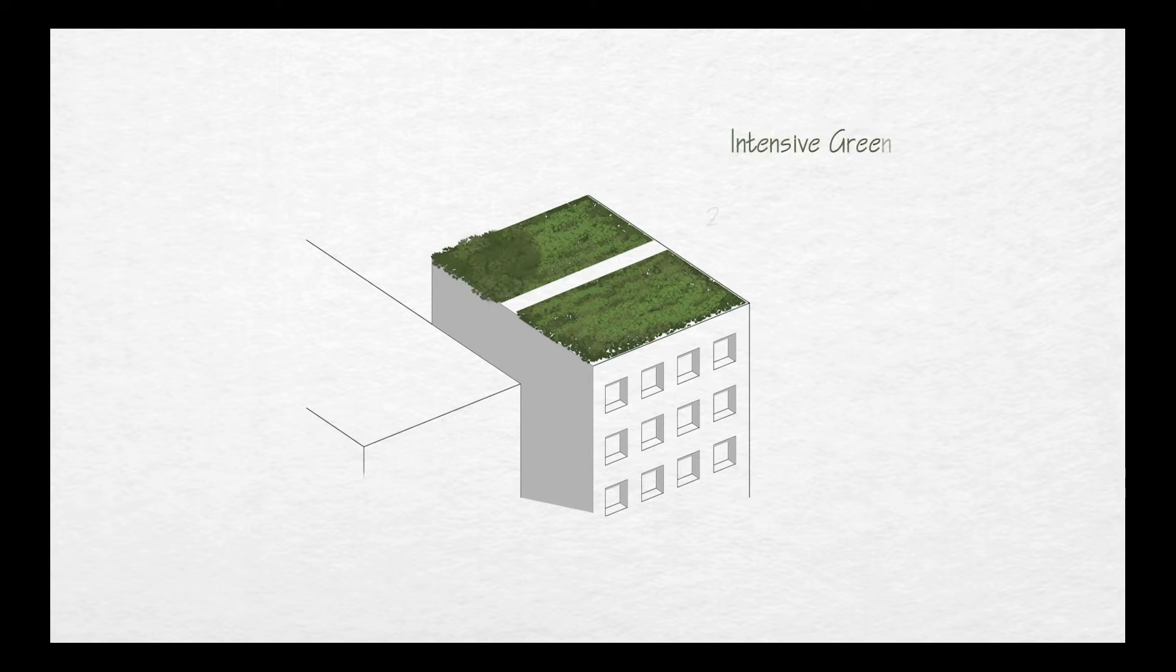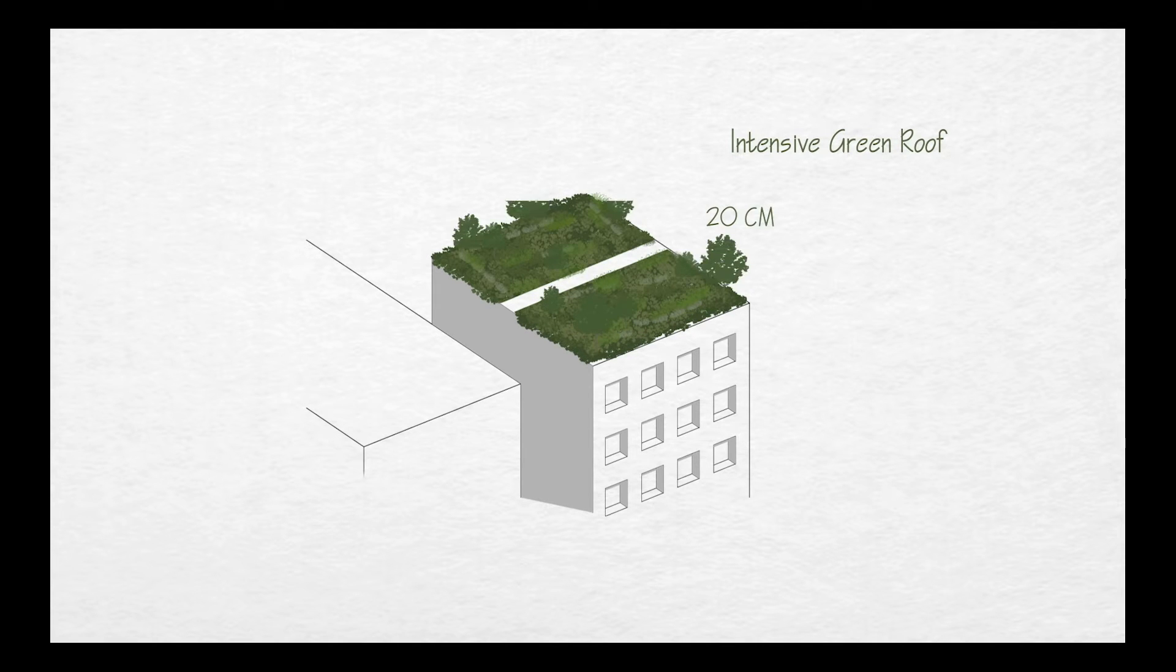Intensive green roofs have a higher layer of substrate, allowing for a broad range of plants, even trees. It can be used for sports and urban gardening or rooftop farming.